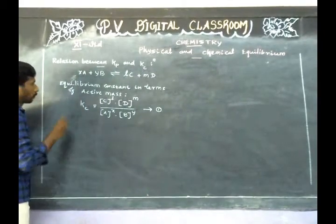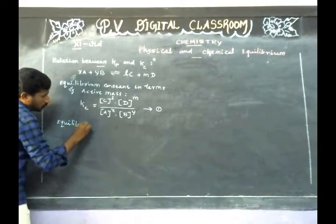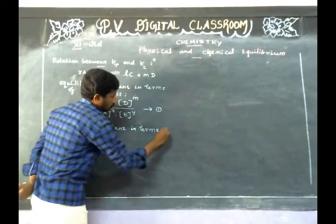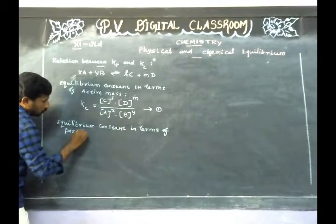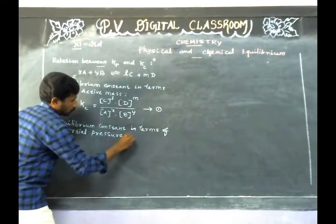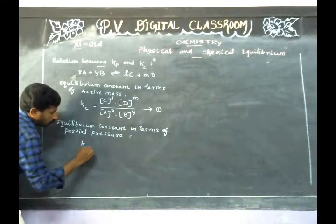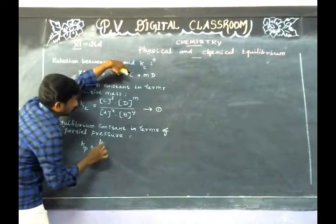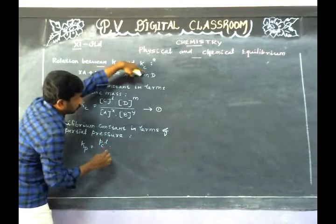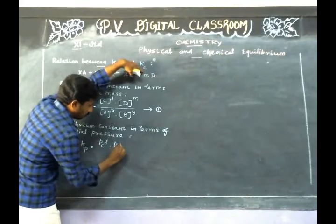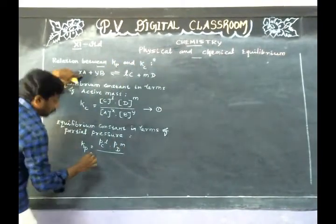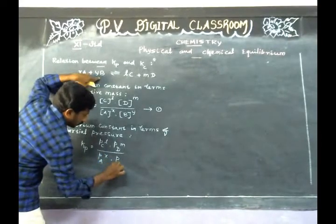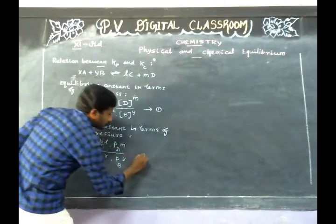Then equilibrium constant in terms of partial pressure: Kp is equal to partial pressure of product C with stoichiometric coefficient L, into partial pressure of product D with stoichiometric coefficient M, divided by partial pressure of reactant A with stoichiometric coefficient X, into partial pressure of reactant B with stoichiometric coefficient Y. This is equation number 2.